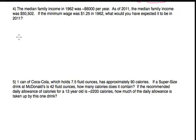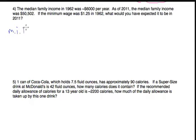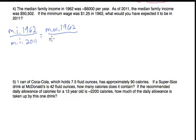Number 4. The median family income in 1962 was approximately $6,000 per year. As of 2011, the median family income was $50,502 per year. If the minimum wage was $1.25 in 1962, what would you have expected it to be in 2011? Let's set up the big picture: compare the median family income in 1962 to the median family income in 2011 — that should equal the minimum wage in 1962 compared to the minimum wage in 2011.